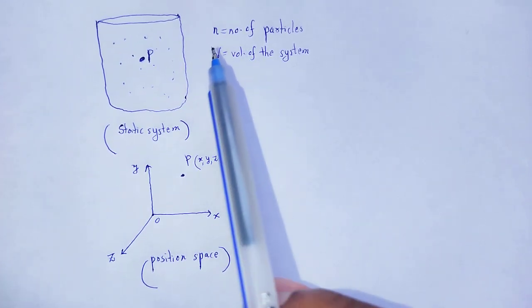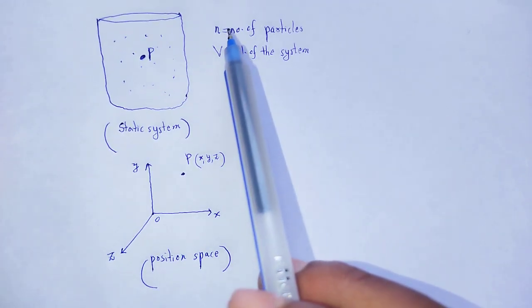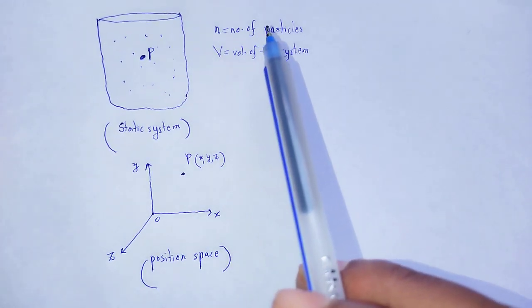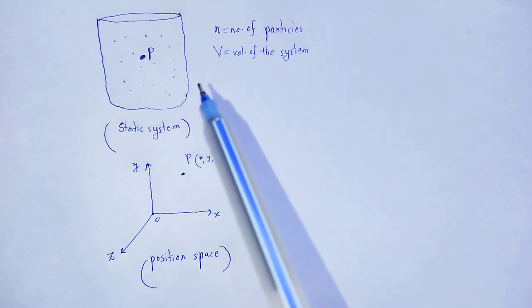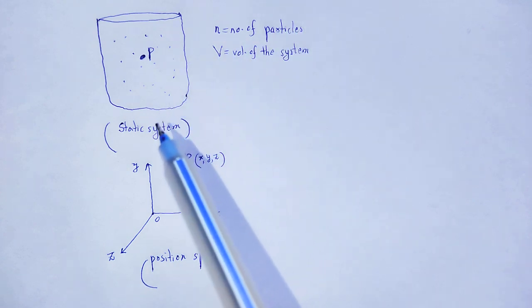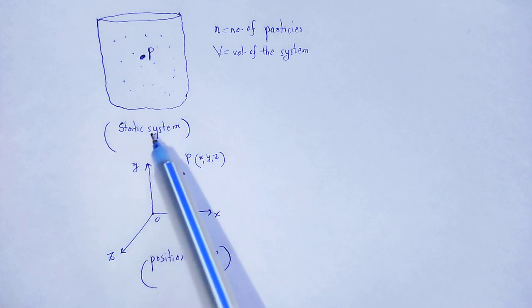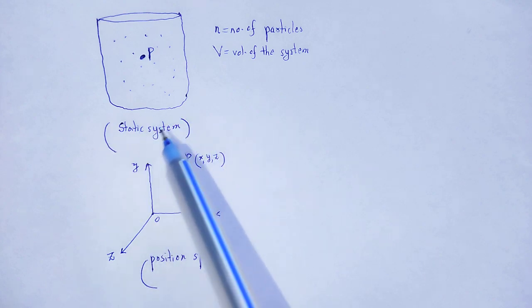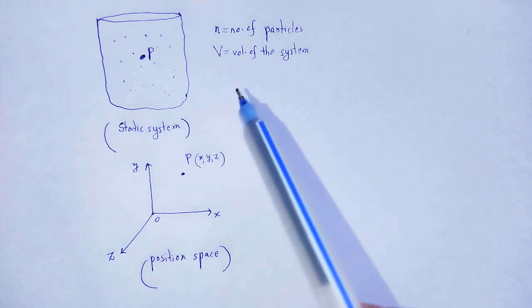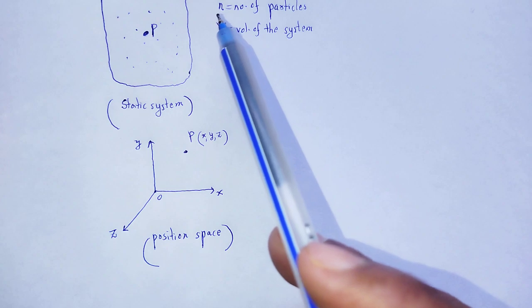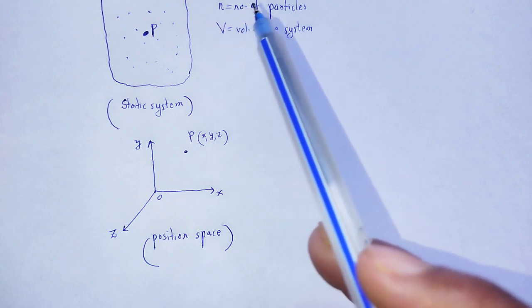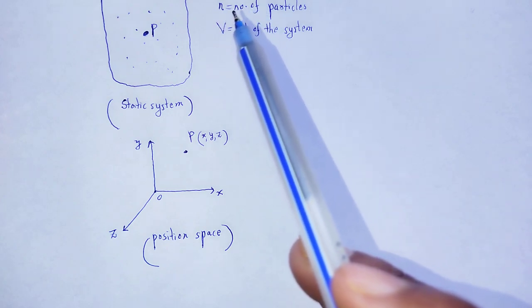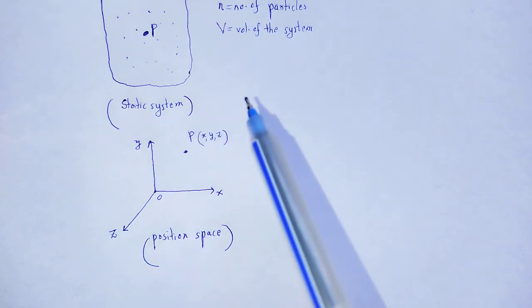If the system consists of N number of particles, then we can get complete information about that static system if we know three into N, that is 3N number of coordinates.